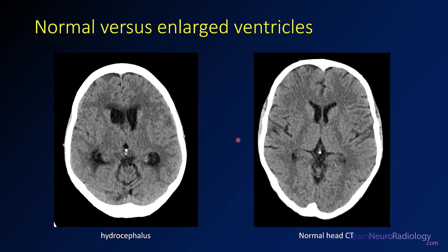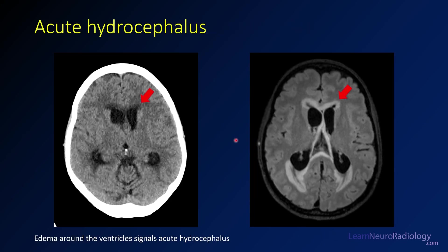In acute hydrocephalus, you do have edema around the ventricles. On this FLAIR MRI image, there's edema around the frontal horns and around the ventricular atria or occipital horns — usually from venous outflow obstruction, where the pressure in the ventricles is compressing the outflow veins, producing a venous edema. You'll hear that called transependymal CSF flow as well.